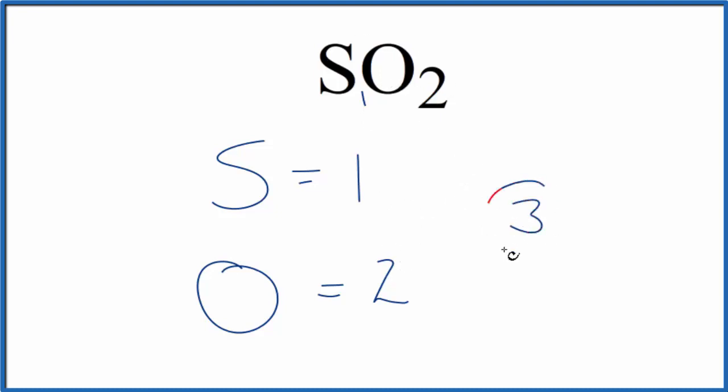So for the molecule, the SO2 molecule, we have a total of two plus one, three total atoms.